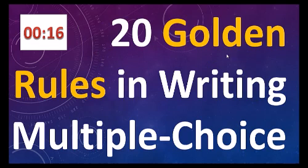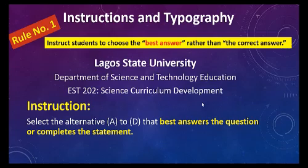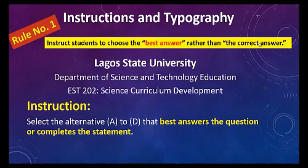Now we move on to the second objective: the 20 golden rules in writing multiple choice items. Rule number one states: instruct students to choose the best answer rather than the correct answer, because there could be variance in knowledge. The instruction should be written as: 'Select the alternative A to D that best answers the question or completes the statement.'